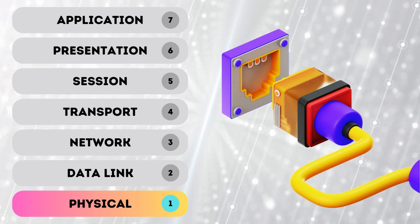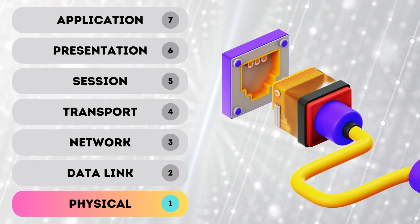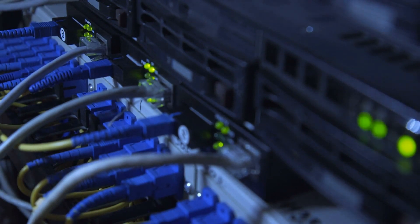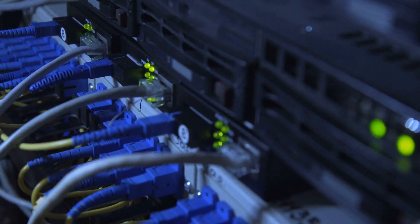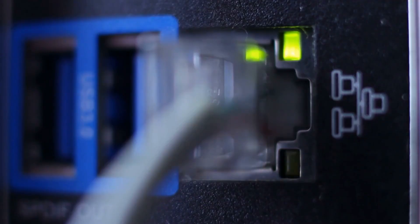Here is the OSI model, starting with the Physical Layer — Layer 1. The Physical Layer is the lowest layer of the OSI model. It is responsible for the physical transmission of data over a network. This layer defines the electrical, mechanical, and procedural specifications for the physical connections between two devices. On this layer you'll commonly see devices such as network cables, Ethernet cables, connectors, and network adapters — things you can physically see and touch in the real world.